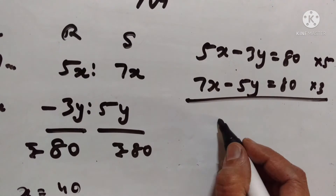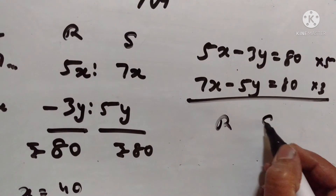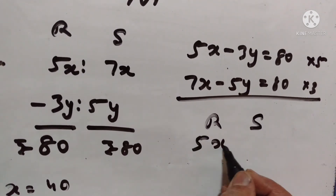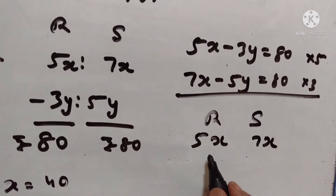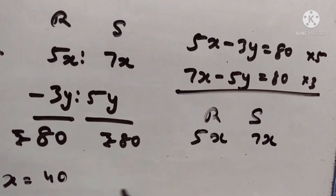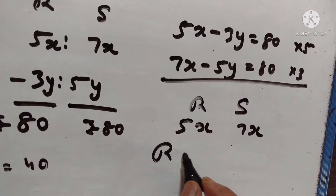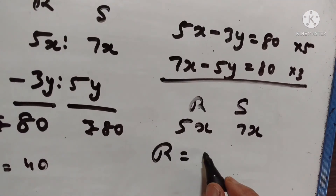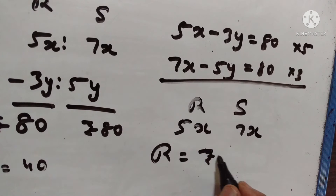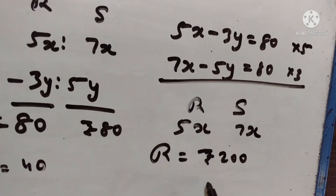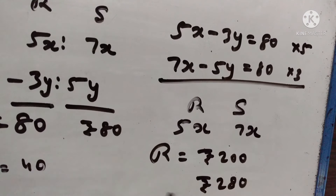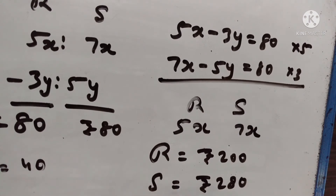So the pocket money of Ravi and Sanjeev is equal to 5x and 7x. 5 into Rs. 40 gives pocket money of Ravi equal to Rs. 200. 7 into Rs. 40 gives 280, so pocket money of Sanjeev is equal to Rs. 280.